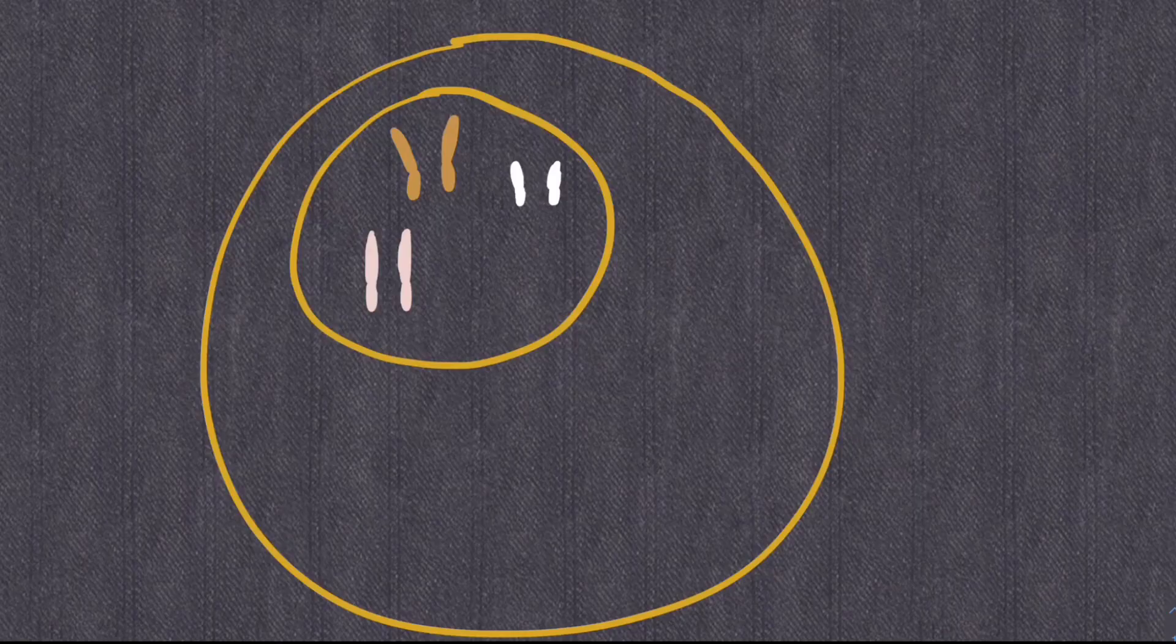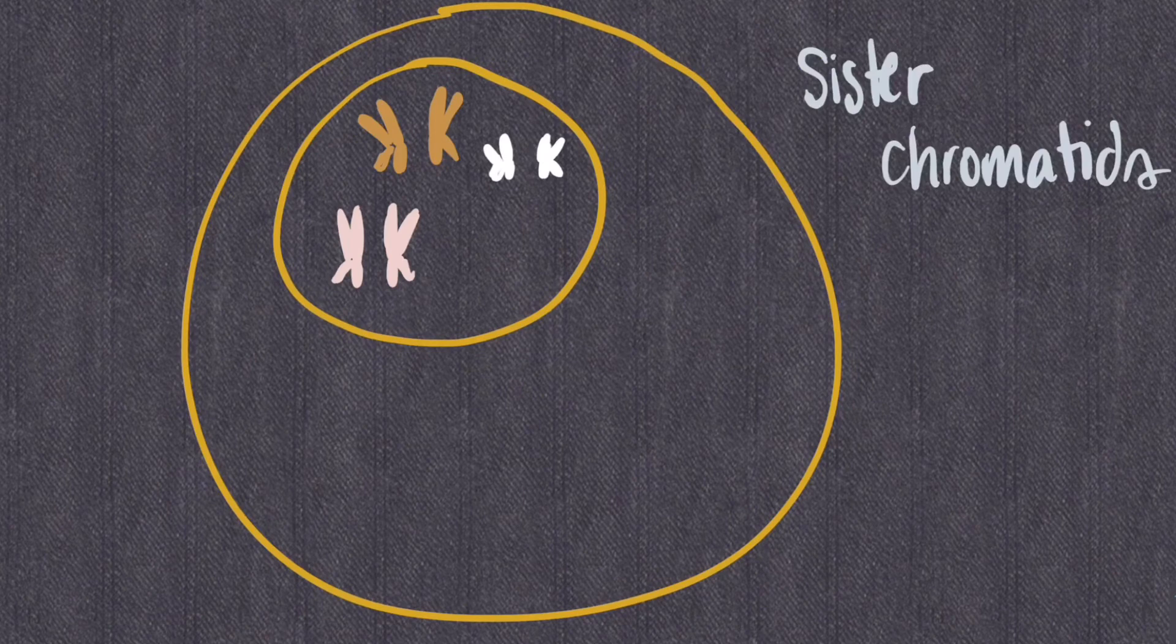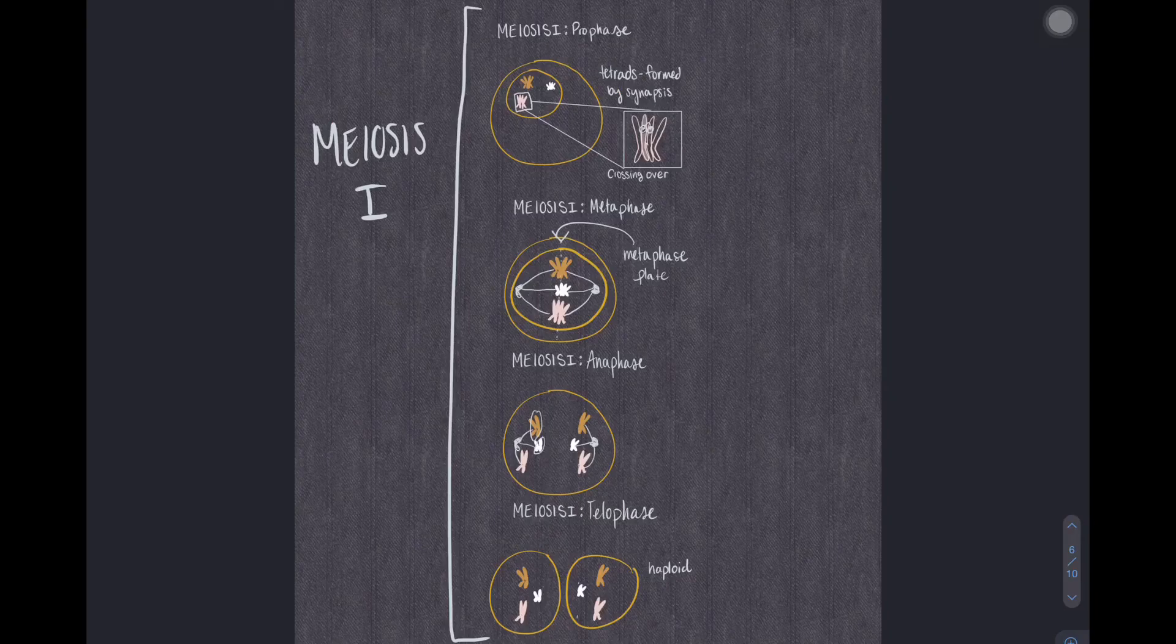Okay, now let's go over the entire thing. We start with the parent cell, that is two sets of chromosomes. The chromosomes are duplicated to form sister chromatids. Then meiosis I starts.